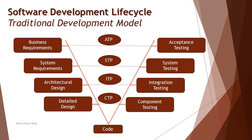In the BRS, user stories read like: 'As a user, I should be able to navigate, enter this value, click on this button, and this is what should happen.' System requirements, on the other hand, are more technical — defined in a manner that the development team would understand in order to implement, test, or design. Once system requirements are well documented, the next phase is design, which is further split into two stages: high-level design and low-level design.